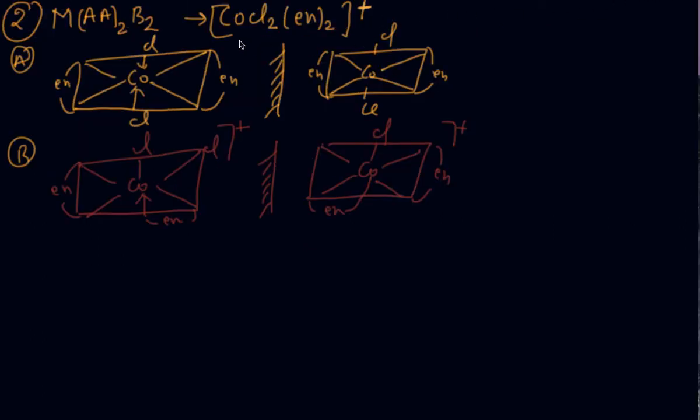Next example, M(AA)₂B₂, like Co(en)₂Cl₂. In the first arrangement, there is no optical isomerism. In the second, I have arranged them in such a way that if I will make their mirror image, the ethylenediamine (en) will come this side and this en is coming this side, and Cl atoms are rotating with each other, and I am getting optical isomerism.